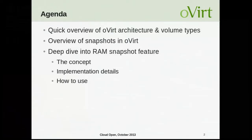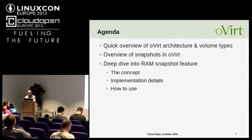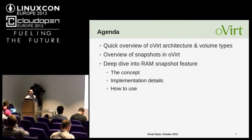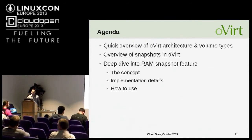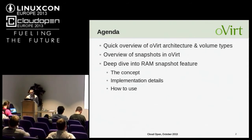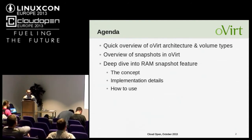We'll start with a quick overview of oVirt architecture and the volume types. Then we will review what snapshots are used for and how they were implemented in oVirt. And then we will get into the details of the RAM snapshot feature — how it improves snapshots in oVirt, how it was implemented, and how it can be used.